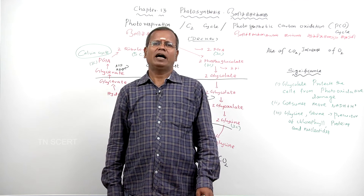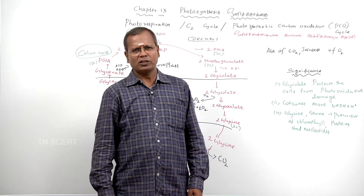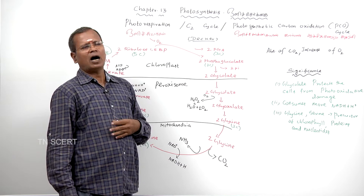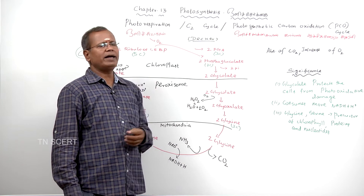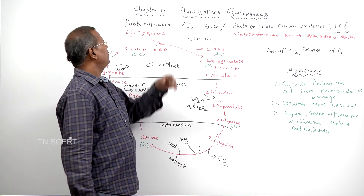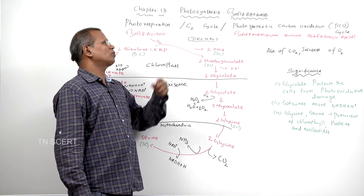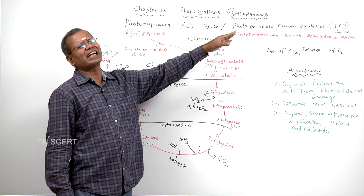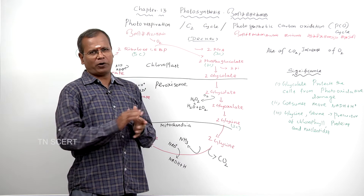Dear students, welcome. Today we are going to learn about photorespiration, also called the C2 cycle, photosynthetic carbon oxidation, or PCO cycle. In Tamil: இதை ஒளிச்வாசம் அல்லது C2 சுற்று, அல்லது ஒளியார்கையின் கார்பன் ஆக்சிஜனேற்று சுற்று, அல்லது PCO சுற்று என்று கூறுவர்.